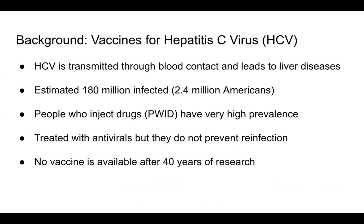Before I introduce our novel recruitment methodology, I'd like to provide some context on hepatitis C virus, or HCV, as we validate our methodology on a simulated HCV vaccine clinical trial. HCV is an RNA virus transmitted through blood contact, and over 60% of all new HCV infections in the U.S. are attributable to sharing syringes and other drug paraphernalia. This represents the major risk factor for contraction of HCV, and thus people who inject drugs, or PWID, are the population most at risk for HCV.